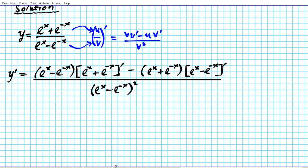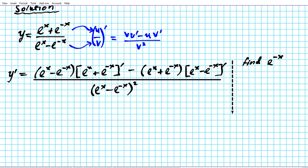When we carry out term-by-term differentiation, we differentiate e to the x and e to the negative x. The derivative of e to the x is simply e to the x. But when we have e to the negative x, this is a composite function, so we have to apply the chain rule. Let's extract that component and find what its derivative is, since it introduces a level of complexity.